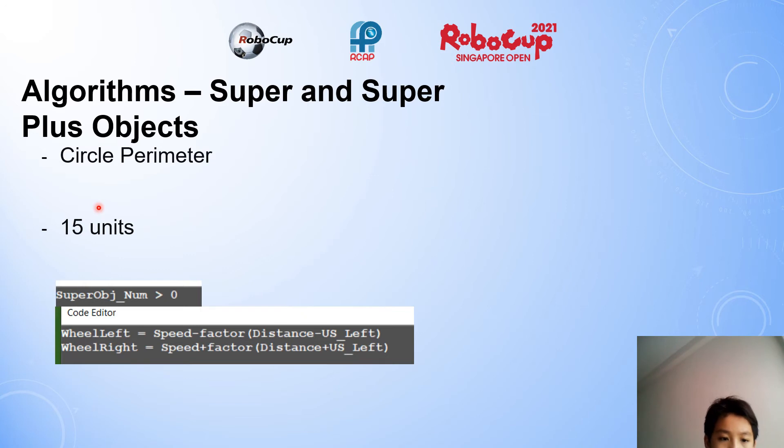So the whole point of that red, cyan, and black set is to generate super or super plus objects. So we created some algorithms to help find the super or super plus objects. These super or super plus objects will be generated 15 units away from the wall. So we want the robot to circle the perimeter 15 units away for the super or super plus objects. So these are our code. So like only when the super object number is greater than zero, then it will do this action here. So you can see where I'm pointing at is the wheel left movement will be the distance minus the left ultrasonic sensor. And the wheel right movement will be the distance plus the left ultrasonic sensor.